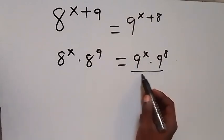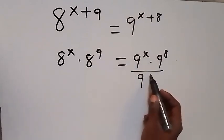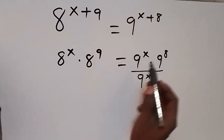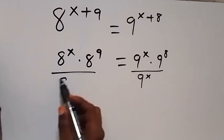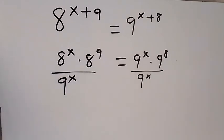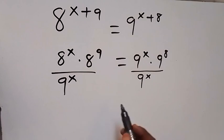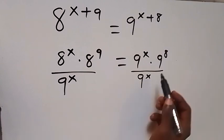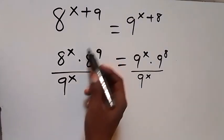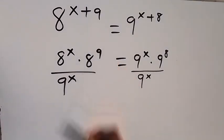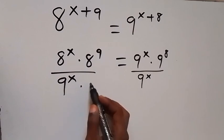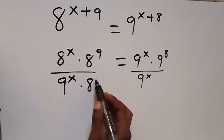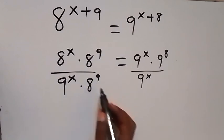So as to remove 9 raised to power x on this side, we divide both sides by 9 raised to power x. And also we want to remove the 8 raised to power 9 on this side, so we divide both sides as well by 8 raised to power 9.